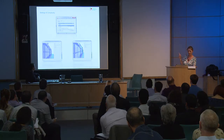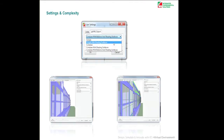Those were the complexity settings I was talking about. With GBXML — not Revit, but GBXML — you've got five levels of complexity. Use the simple one mostly, or simple with shading surfaces. That does dramatically reduce the number of surfaces that the software is trying to deal with.